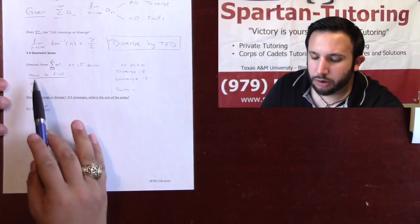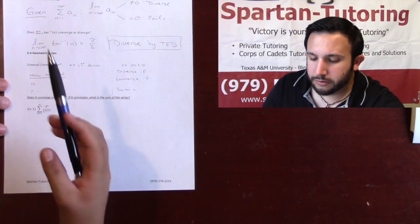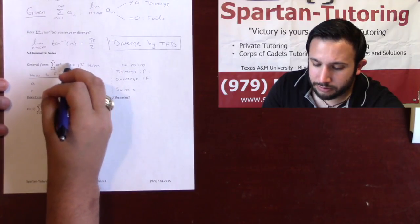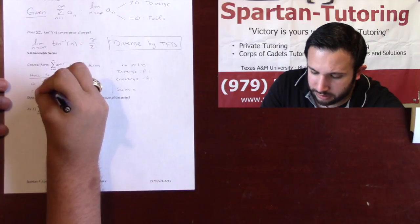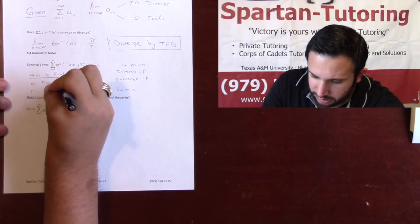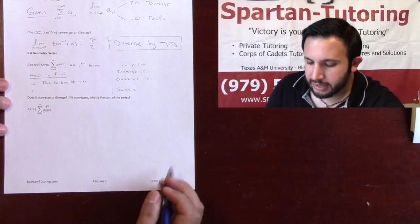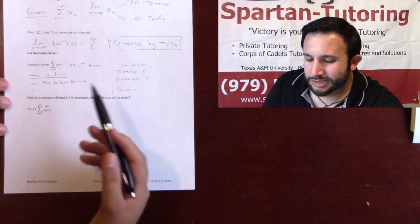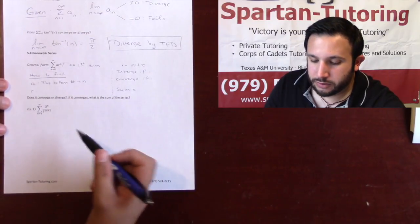Now, how are we going to find a and r? The way you're going to find a is you're going to take this bottom number and plug it into n. So all you need to do is plug the bottom number into n. That's it, because when you plug that bottom number into n, that by definition is your first term.